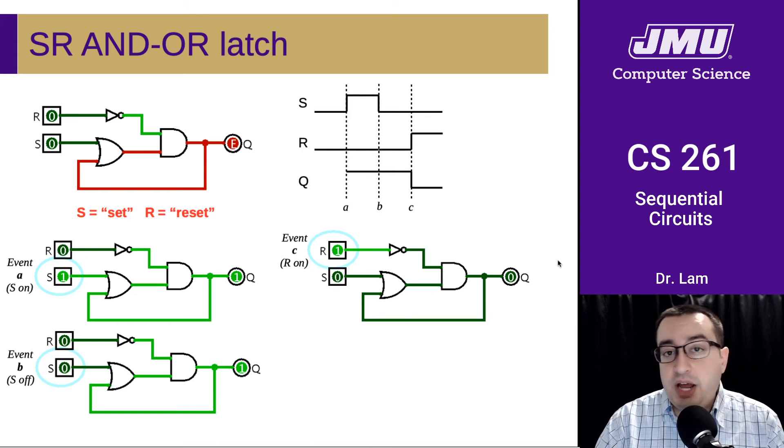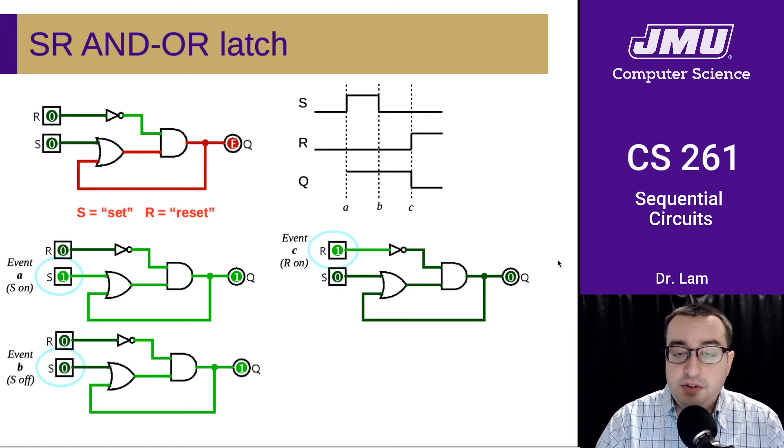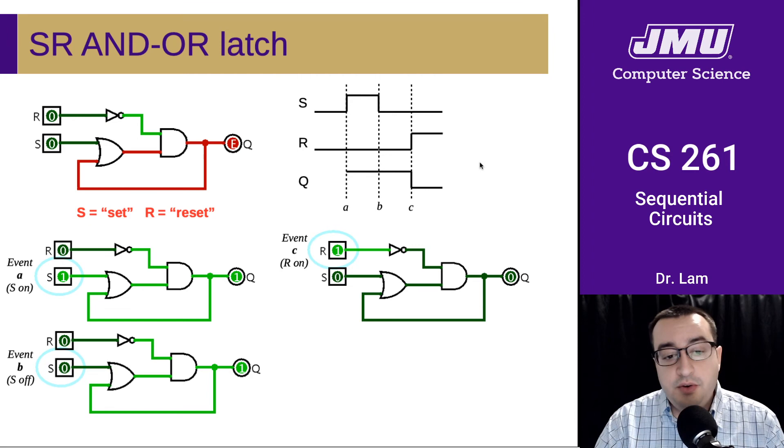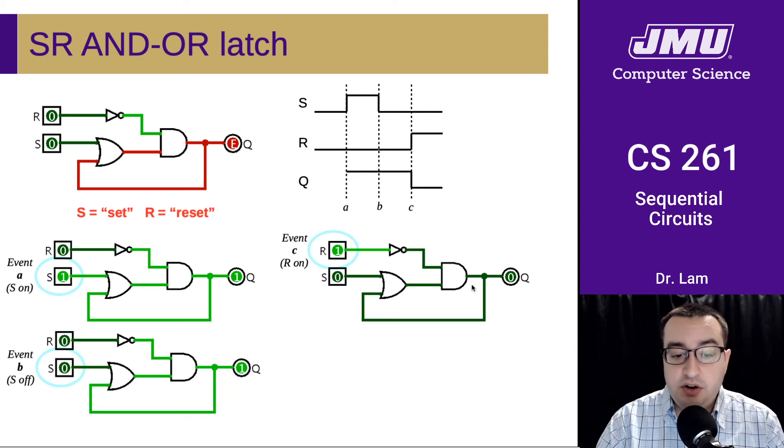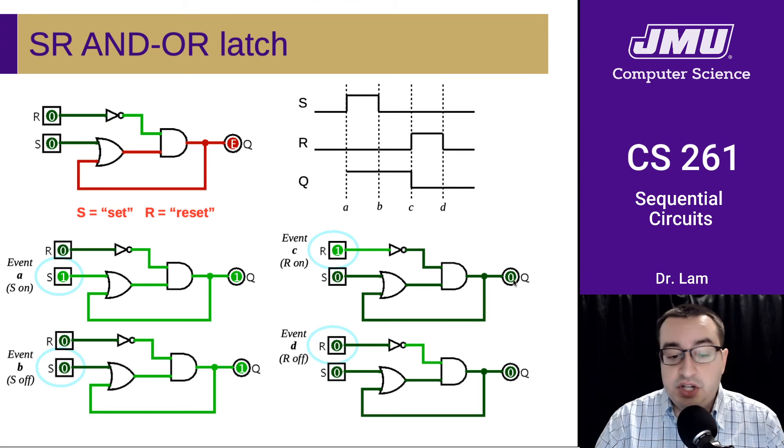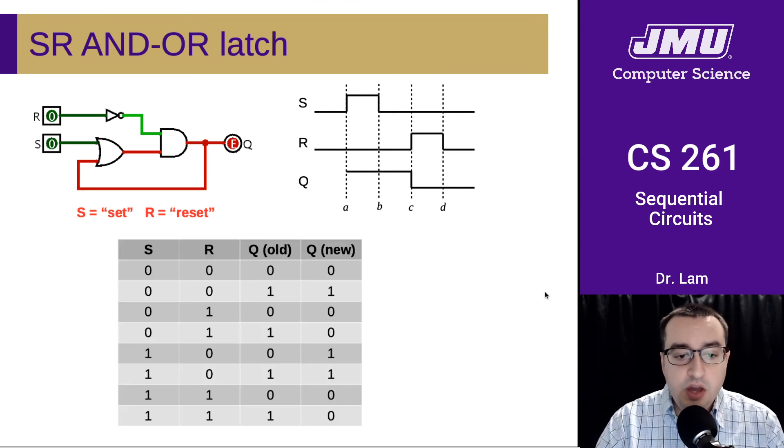So the last bit then is what happens when we turn R off. Pause the video and see if you can predict what's going to happen then. Hopefully you can see that when R turns off, that's going to turn this signal on. But since we're still getting the zero from the previous output of Q, then nothing else is going to change.